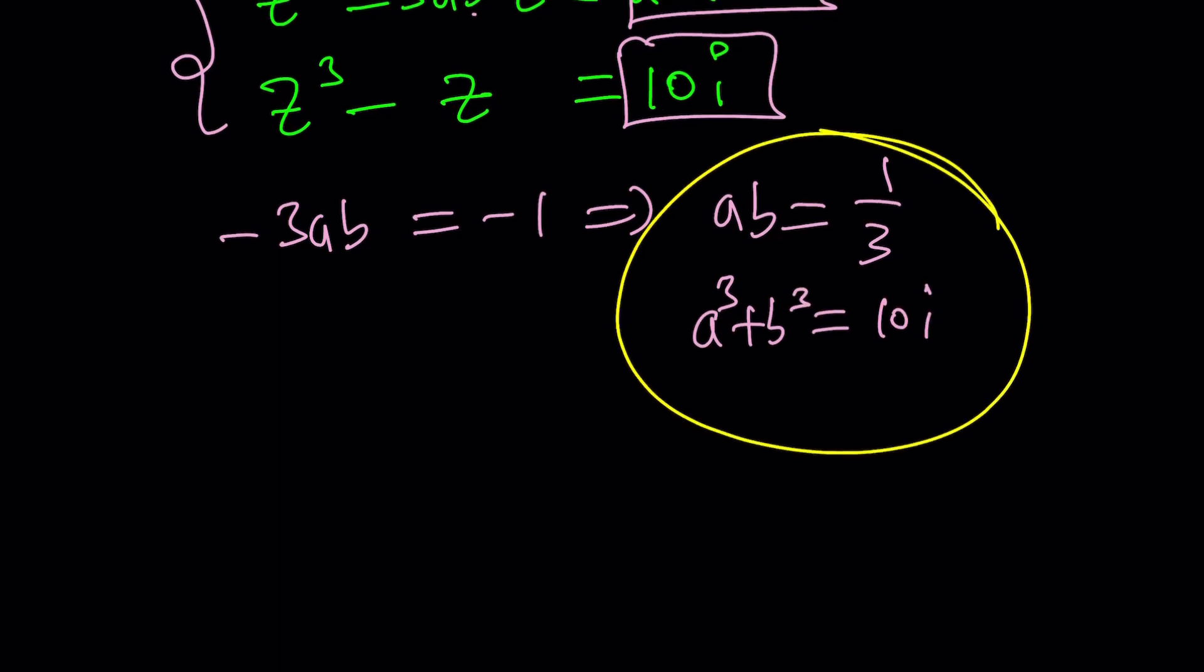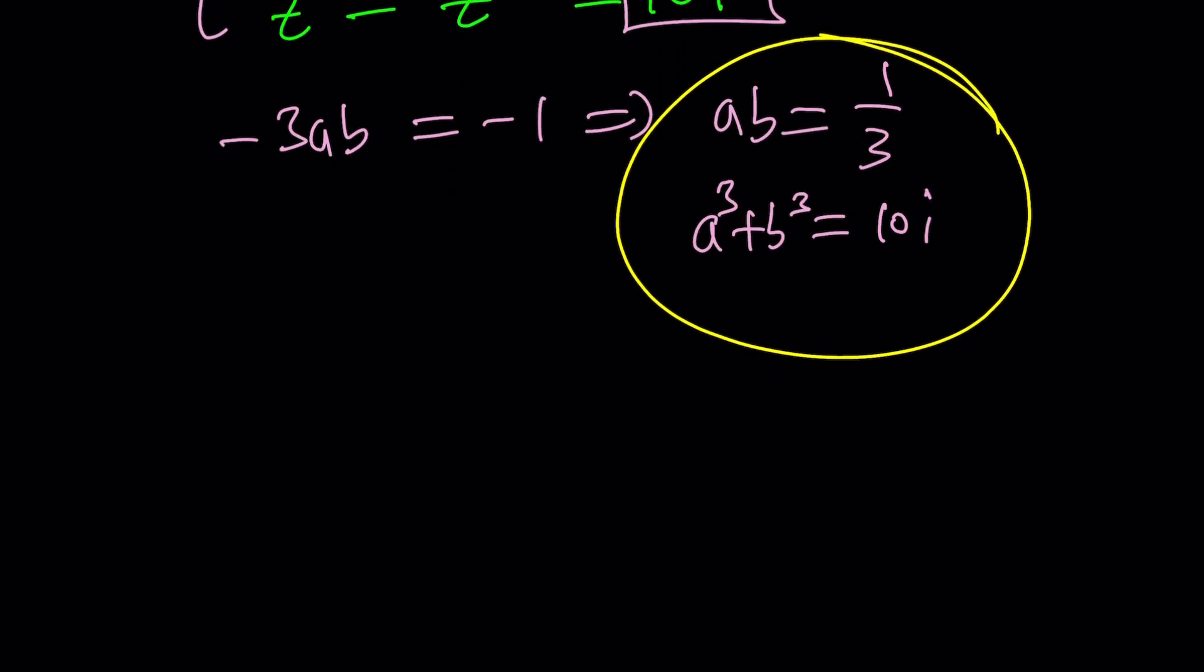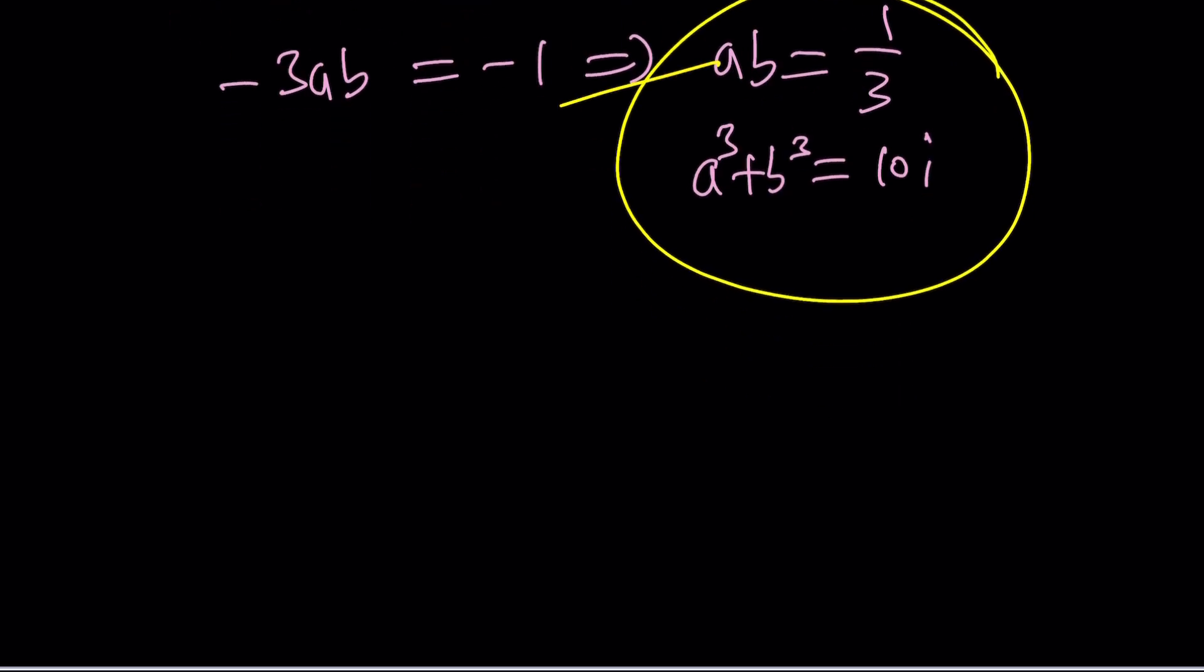It looks cubic, but it's not cubic. It's quadratic. Because if you cube the first equation, which is the first one, I mean ab equals 1/3, you get a³b³ equals 1/27. And then from the second equation, which is this one, you can isolate b³ as 10i - a³.